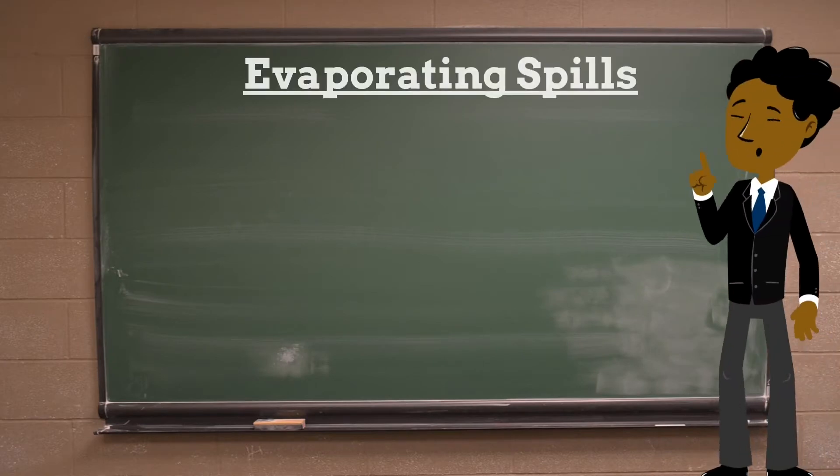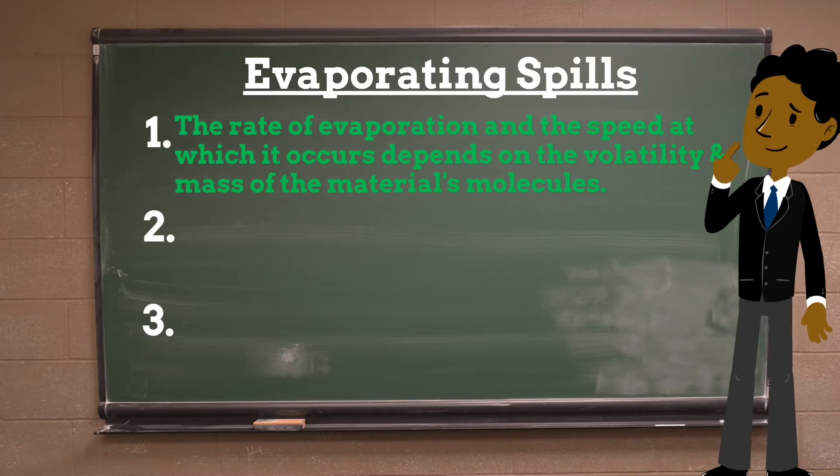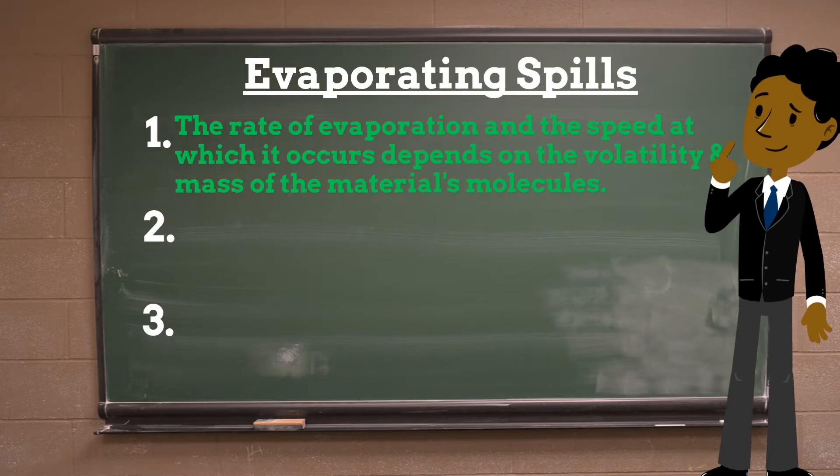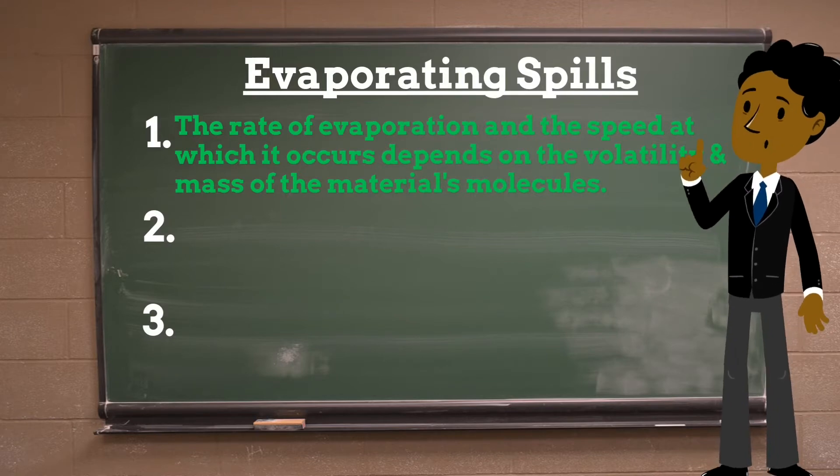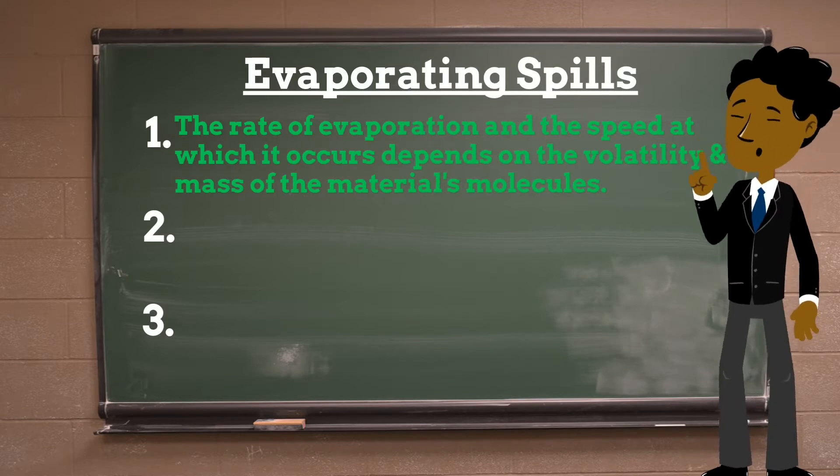Today we will talk about evaporating spills. The rate of evaporation and the speed at which it occurs depends upon the volatility of the material. A hydrocarbon with a large percentage of light and volatile compounds will evaporate more than one with a larger proportion of heavier compounds.